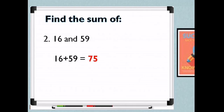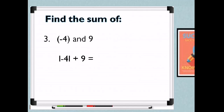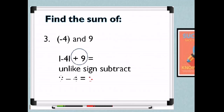For example 3, one is negative and the other is positive. Get the absolute value of the negative: negative 4 plus 9. We subtract 9 and 4, then copy the sign of the higher absolute value, which is 9 (positive). So 9 minus 4 equals positive 5. The sign is positive because the sign of the larger number, 9, is positive.